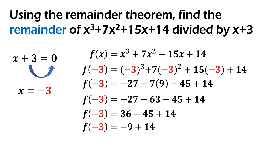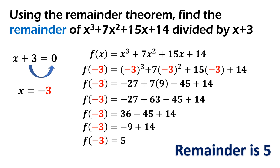36 minus 45 is negative 9 plus 14. Magkaiba ng sign, so you subtract and then copy the sign of the bigger number. So, f of negative 3 is equal to 5. Our remainder is 5.